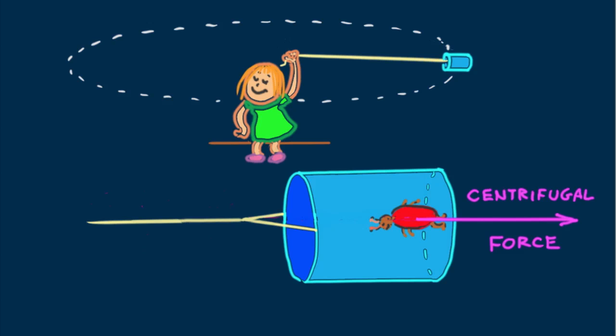Therefore, physicists call centrifugal force an apparent force, a fictitious force, not a real force like gravity, electric forces, or nuclear forces. Yet, to the bug in the whirling can, it is real enough.